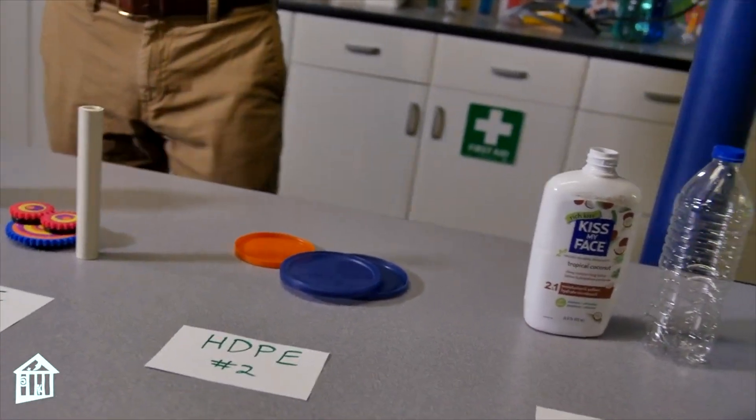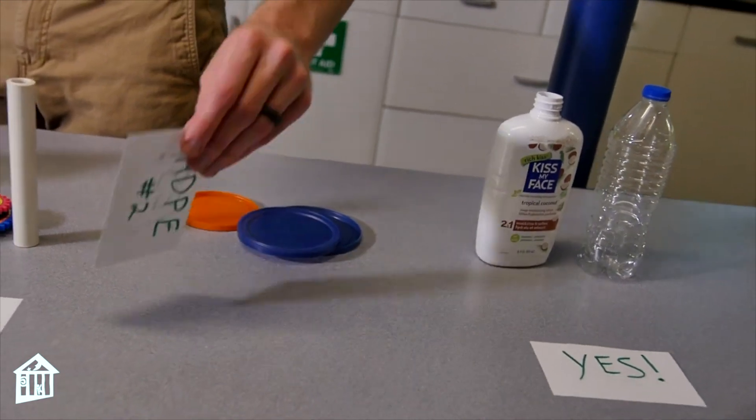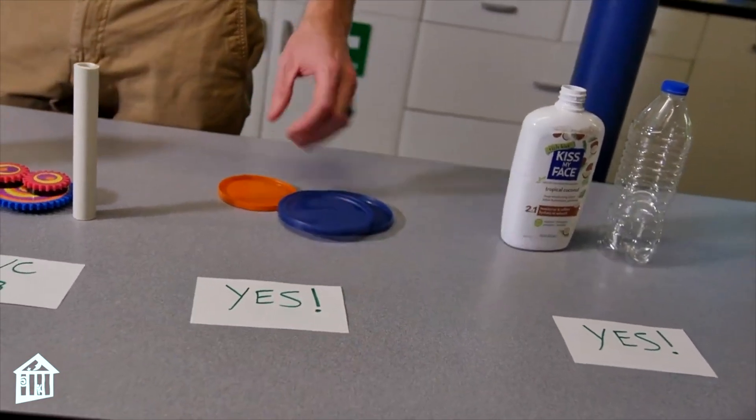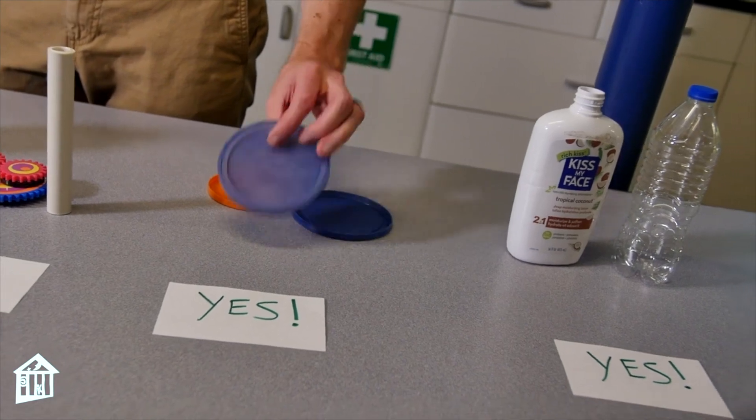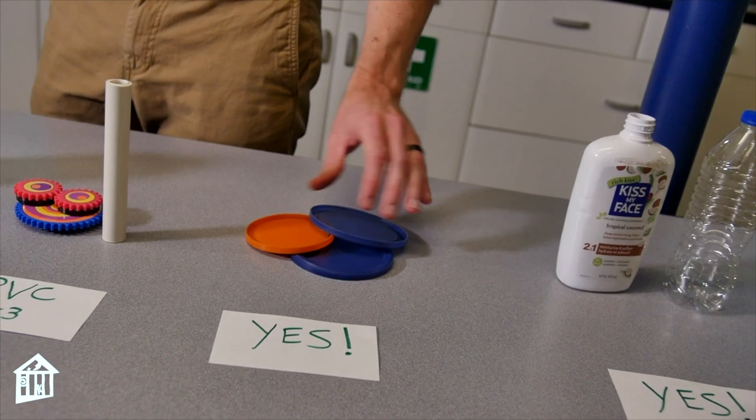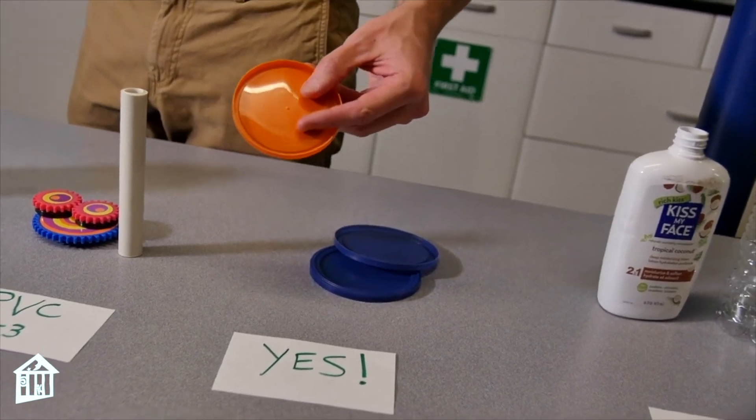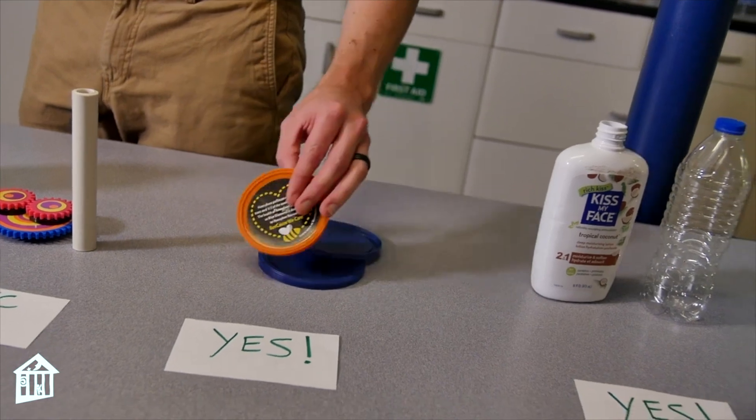For our second plastic, high density polyethylene. Is it recyclable? Yes, it is. So this is a more rigid plastic commonly found in milk jugs, juice bottles, and a lot of times it's lids. You'll see that a lot. And what is really cool is everything is labeled. So you can see the number and then you can see whether it's recyclable or not.